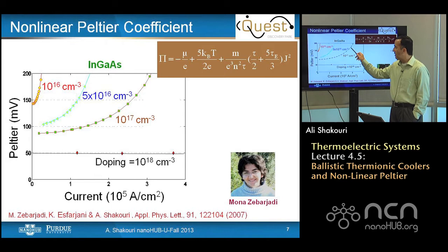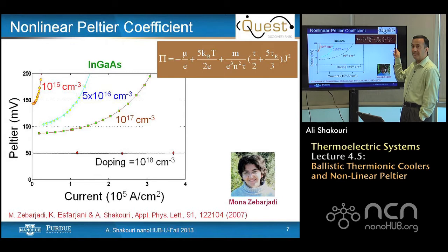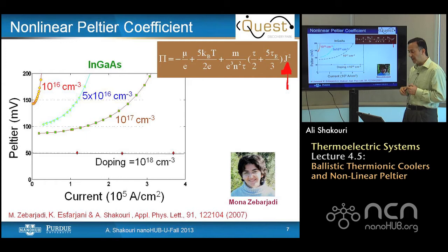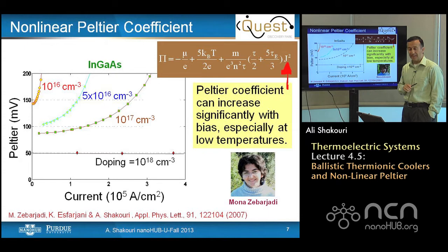These are results from Monte Carlo, fitted with an analytical equation. The Peltier coefficient has a form coming from the Fermi energy and kT — this comes from the regular band structure — but there is a component that depends on current. This current dependence is what gives the nonlinearity. It goes as current squared because of symmetry: it cannot be linear in current since it shouldn't change with the direction of current. And it depends on the energy relaxation length and the total momentum relaxation length. This comes really from the heat capacity of the electron gas. So the Peltier coefficient can increase significantly with bias, especially at low temperatures.